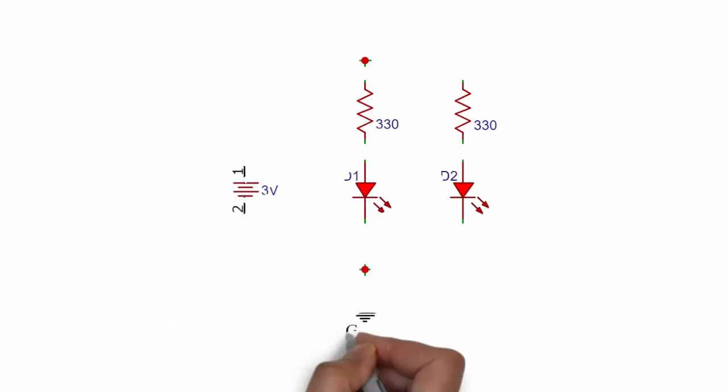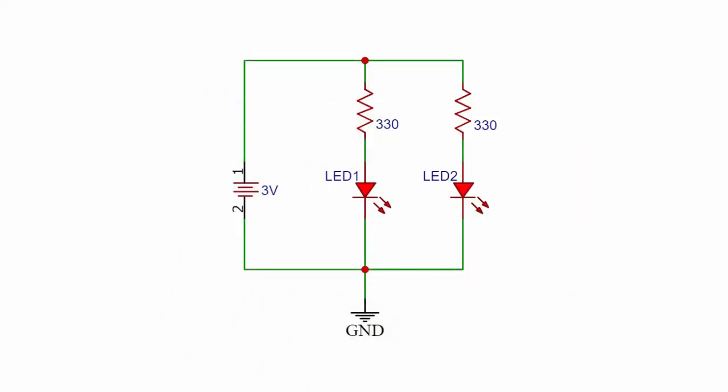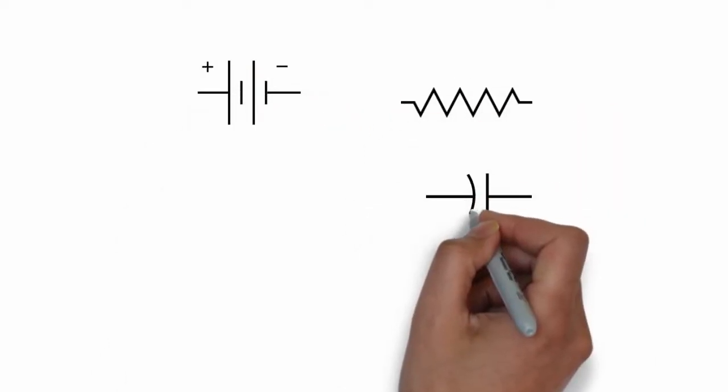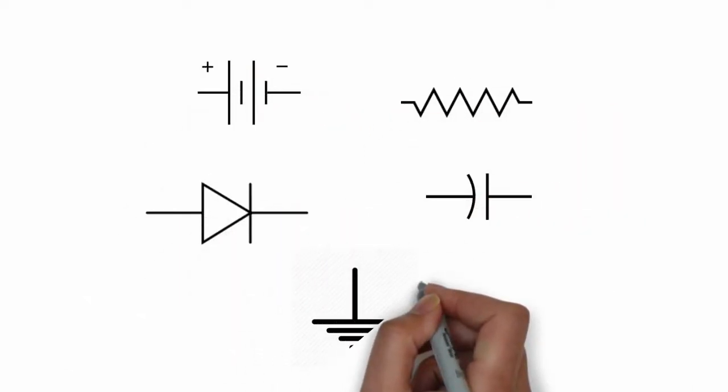We see different types of electronic circuits everywhere around us. Some basic elements of these circuits include power source, circuit elements like resistors, capacitors, diodes and even a ground.